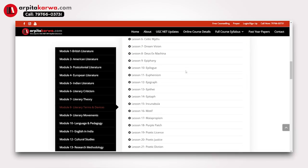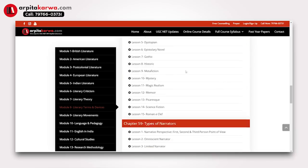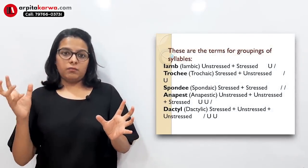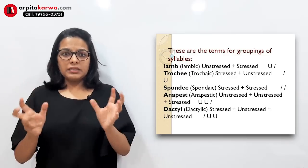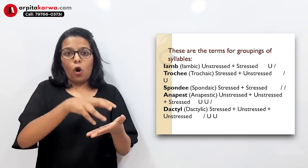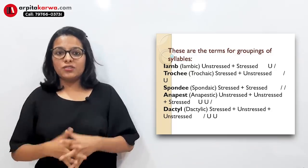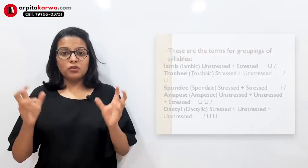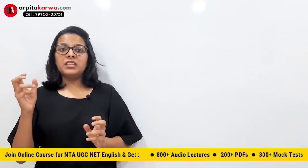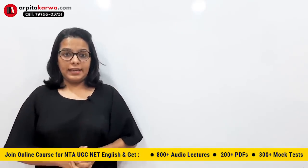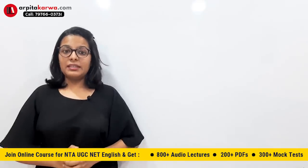Another important topic this time was meter and rhythm — they asked two questions. One was about iambic and trochaic rhythm, asking which of the following examples is iambic and which is trochaic. Another question was about dactylic meter. So dactylic meter, iambic meter, and trochaic meter were all asked in this NET exam.